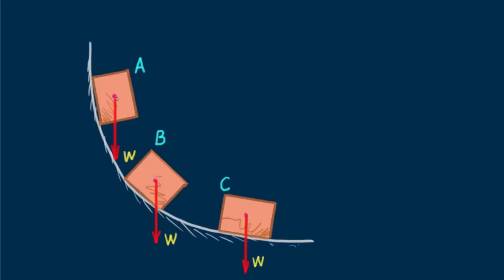We know that the block will gain speed as it slides down the curved ramp. I want to jump ahead and leave you with a question. At which location, A, B, or C, will the acceleration along the ramp be greatest?